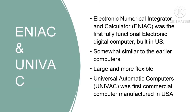Next is ENIAC and UNIVAC. The Electronic Numerical Integrator and Calculator, i.e. ENIAC, was the first fully functional electronic digital computer to be built in the United States. It was somewhat similar to the earlier computers but was considerably larger and more flexible. The Universal Automatic Computer, i.e. UNIVAC, was the first commercial computer manufactured in the USA.